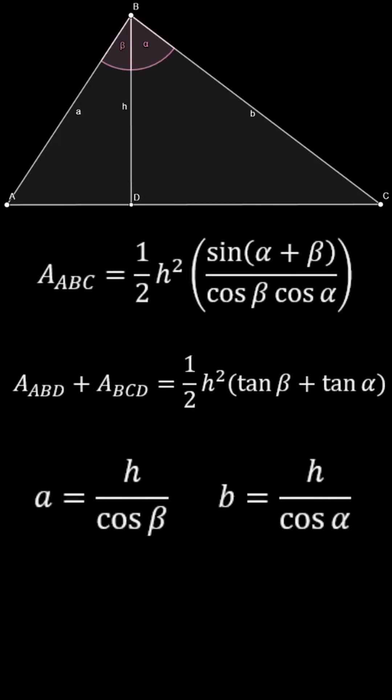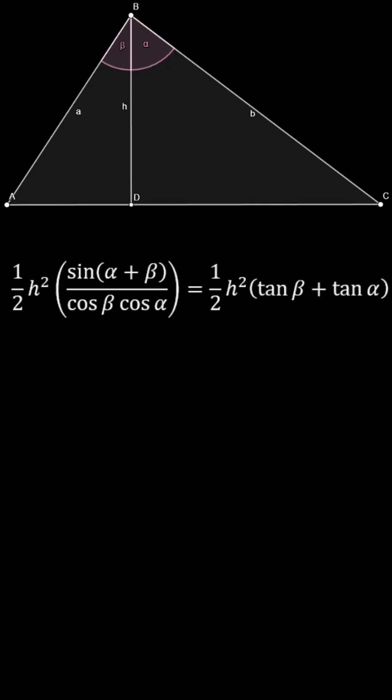Now both of our expressions contain only the height and certain trigonometric functions of the angles. Since the sum of the areas of right triangles is identical to area ABC, we can set them equal.